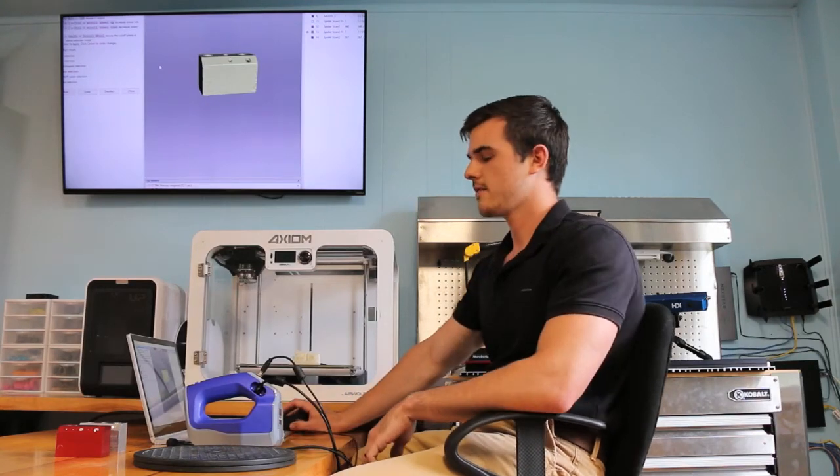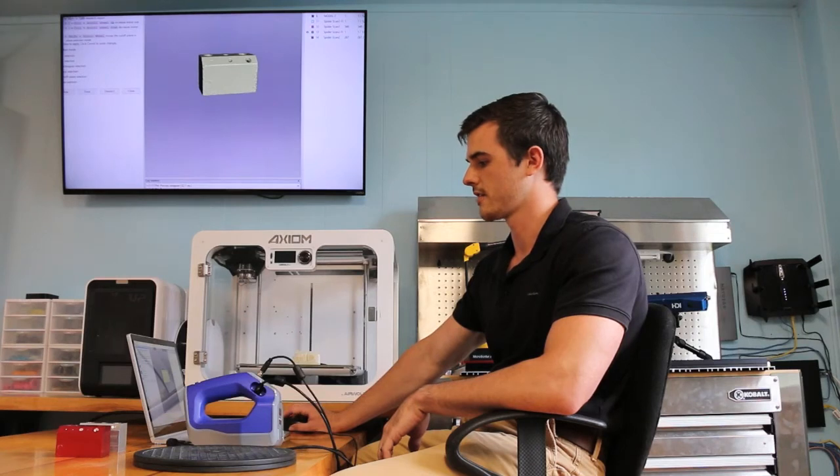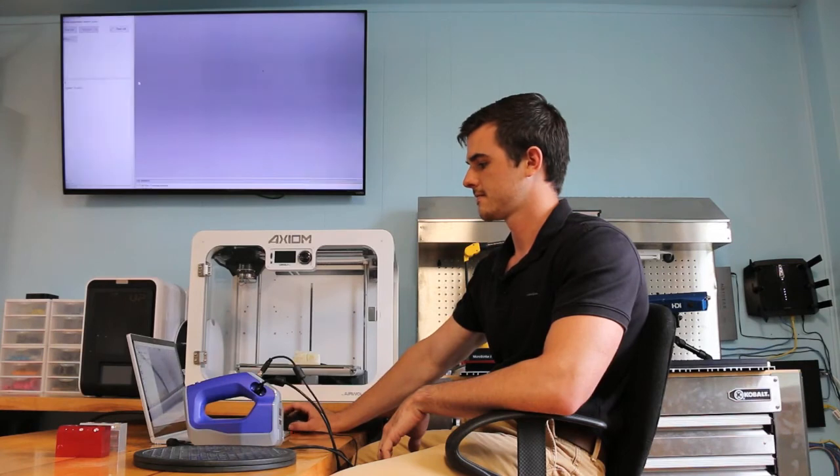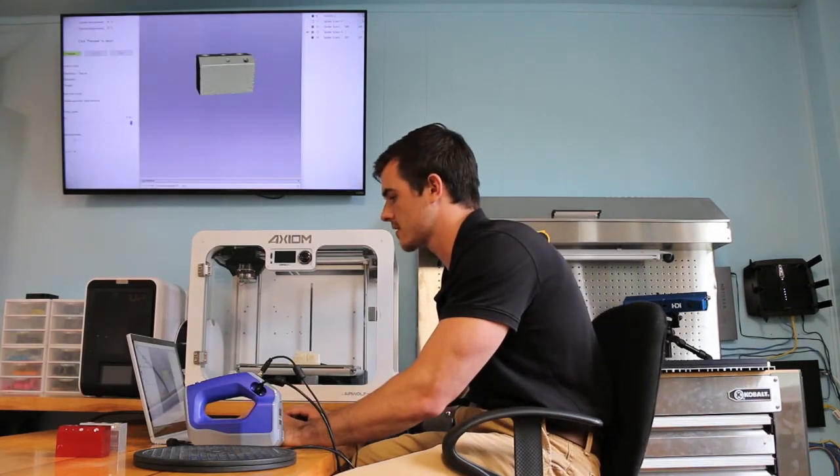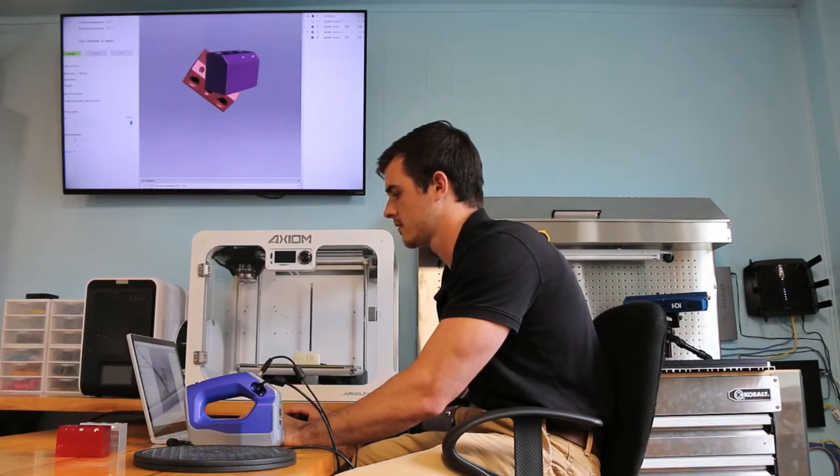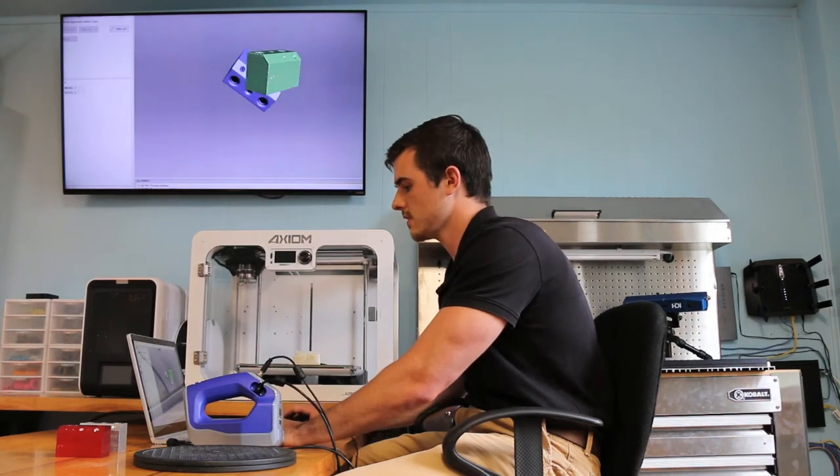Okay, so what I'm going to do now is align these two parts and then show you how different they are from one another. So I just go into the align tab. First, I need to select the proper scans that I want to align.